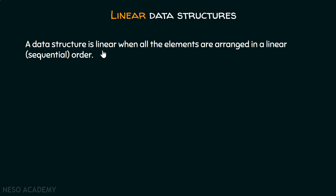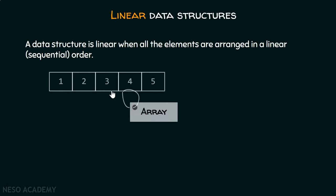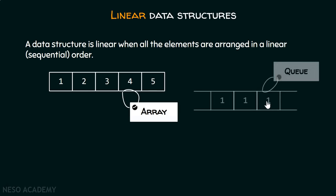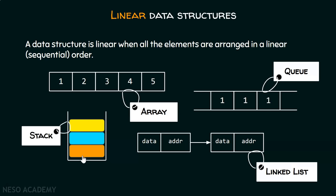A data structure is linear when all the elements are arranged in a linear or sequential order. If the elements are arranged in a linear or sequential order, then we can say that it is a linear data structure. For example, we have arrays, queues, linked lists, and stacks. These are all linear data structures.